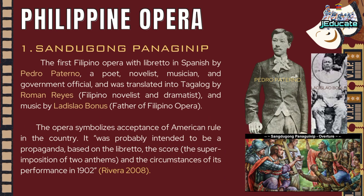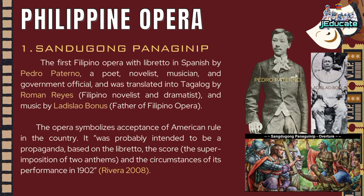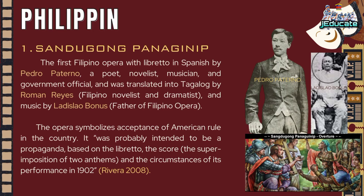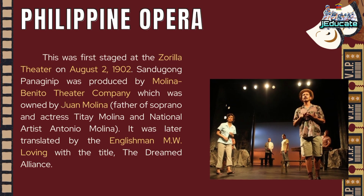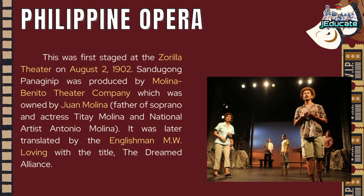Philippine opera. Number 1: Sandugong Panagimpan. The first Filipino opera, with libretto in Spanish by Pedro Paterno — a poet, novelist, musician, and government official — and translated into Tagalog by Roman Reyes, Filipino novelist and dramatist, and music by Ladislao Bonus, father of Filipino opera. The opera symbolizes acceptance of American rule in the country. It was probably intended as propaganda, based on the libretto, the score, and the circumstances of its performance in 1902 (Rivera, 2008). This was first staged at the Zarilla Theatre on August 2, 1902.